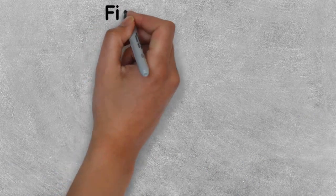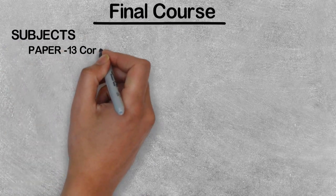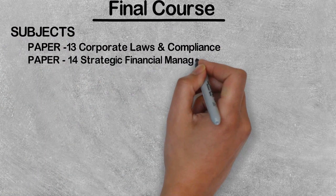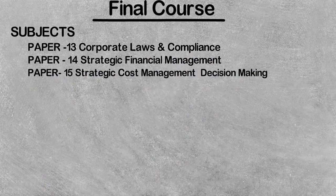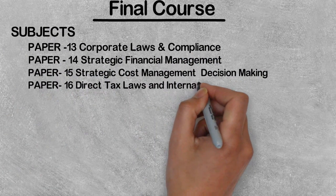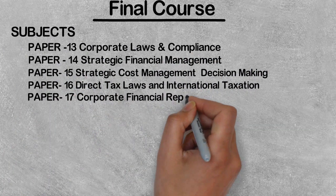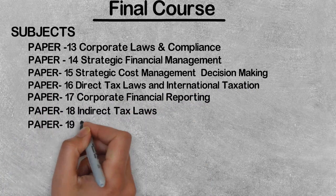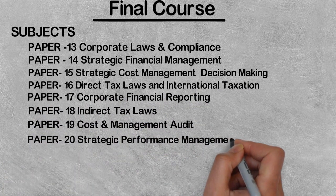Now let's talk about the Final course. The Final course also has 8 subjects: Paper 13 — Corporate Laws and Compliance; Paper 14 — Strategic Financial Management; Paper 15 — Strategic Cost Management and Decision Making; Paper 16 — Direct Taxation and International Taxation; Paper 17 — Corporate Financial Reporting; Paper 18 — Indirect Tax Laws and Practice; Paper 19 — Cost and Management Audit; Paper 20 — Strategic Performance Management and Business Valuation.